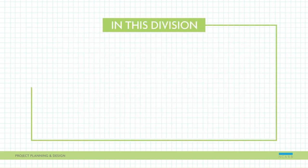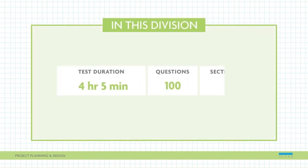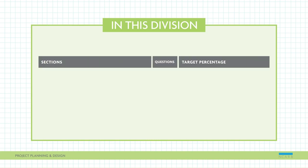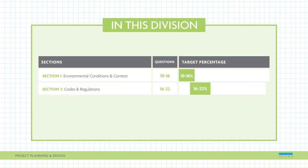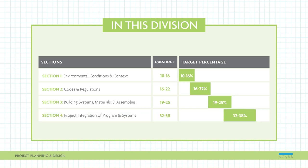You'll have four hours and five minutes to answer 100 questions in this division, which includes sections on Environmental Conditions and Context, Codes and Regulations, Building Systems, Materials and Assemblies, Project Integration of Program and Systems, and Project Costs and Budgeting.